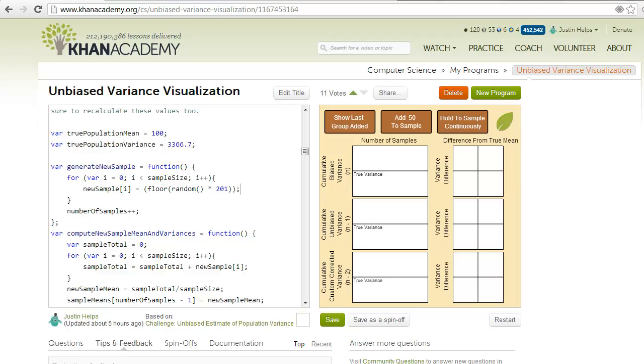Hi, I'm Justin, and here's my attempt at the Khan Academy Challenge: making a program that illustrates why dividing by n-1 instead of n is the way to go if you're trying to estimate the variance of a population using a limited sample of that population.